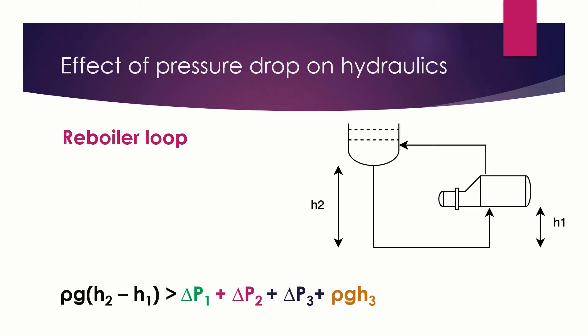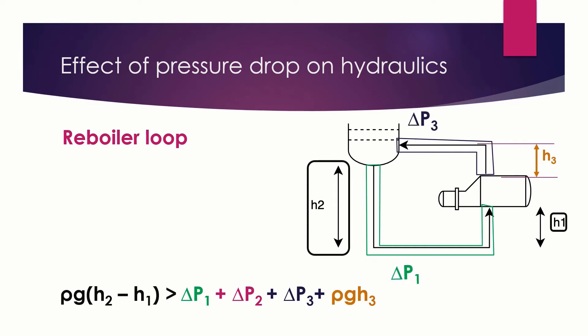The only driving force here is the difference between the liquid density here and the vapor density here. The liquid density is much higher than the vapor density. So this means that this loop is very critical. We will need to increase the difference between H2 and H1 and minimize the pressure drop in the pipes here and the pressure drop in the reboiler.